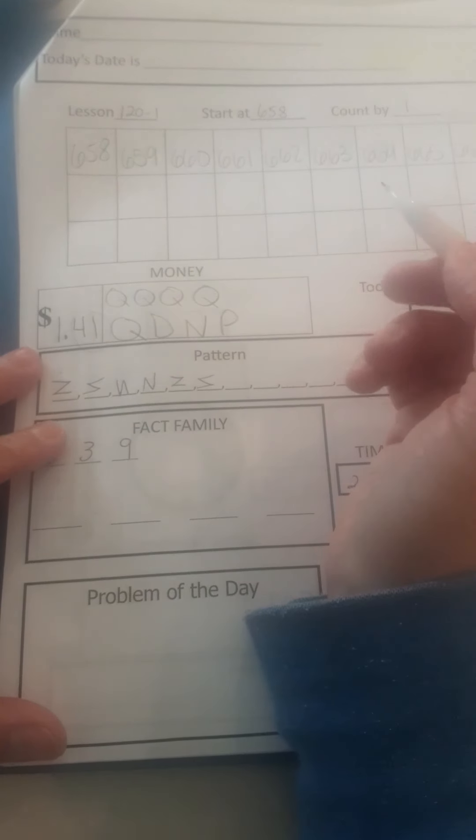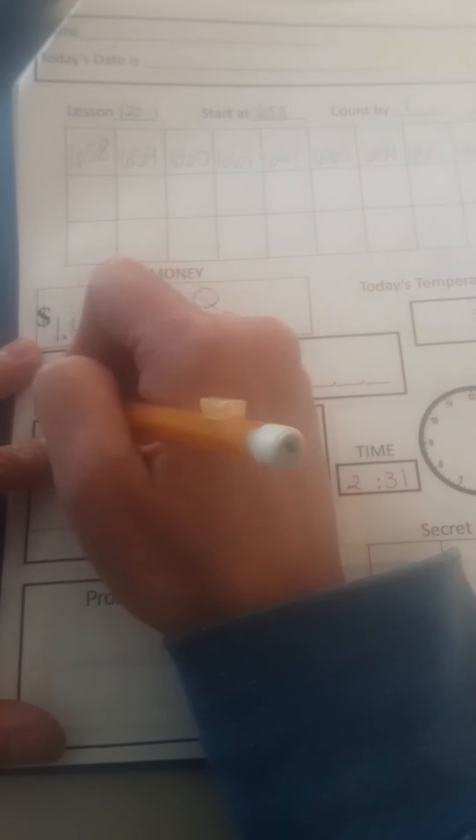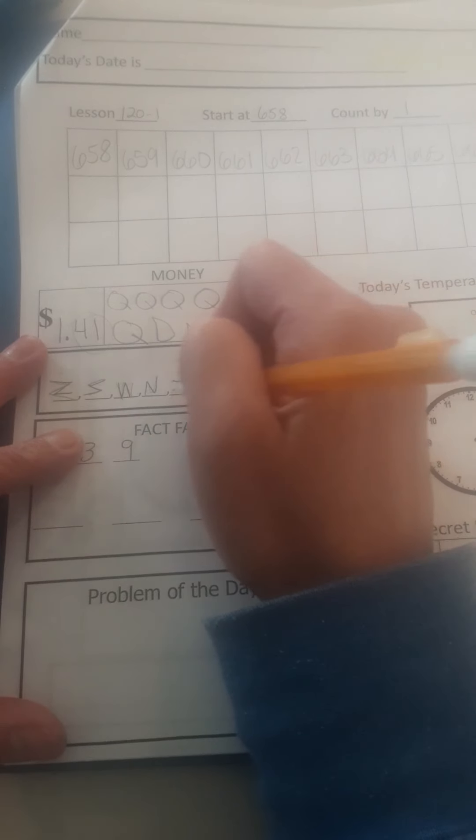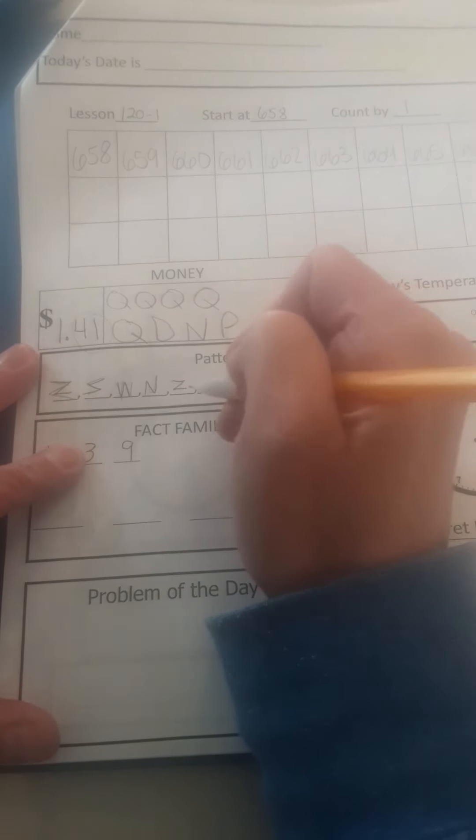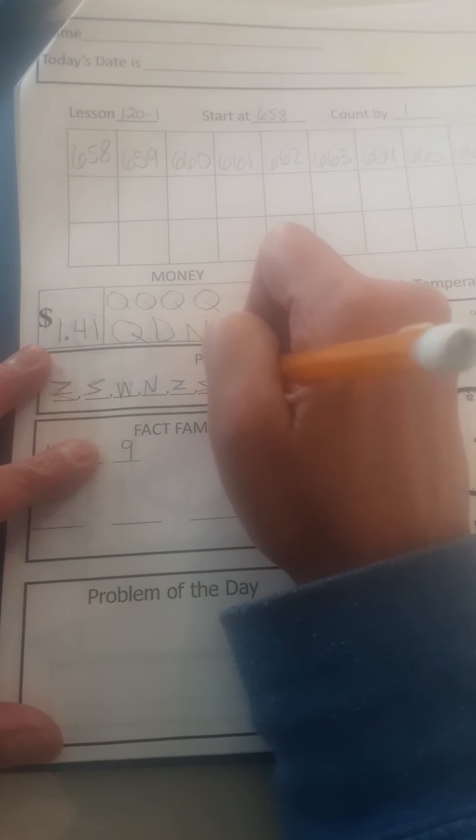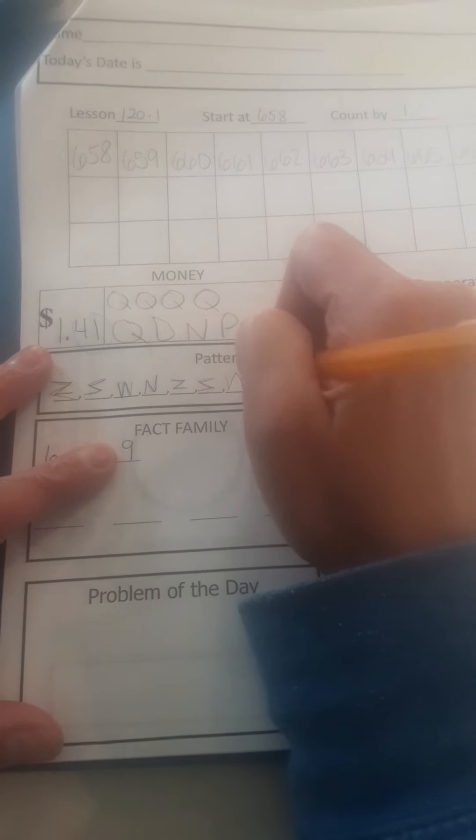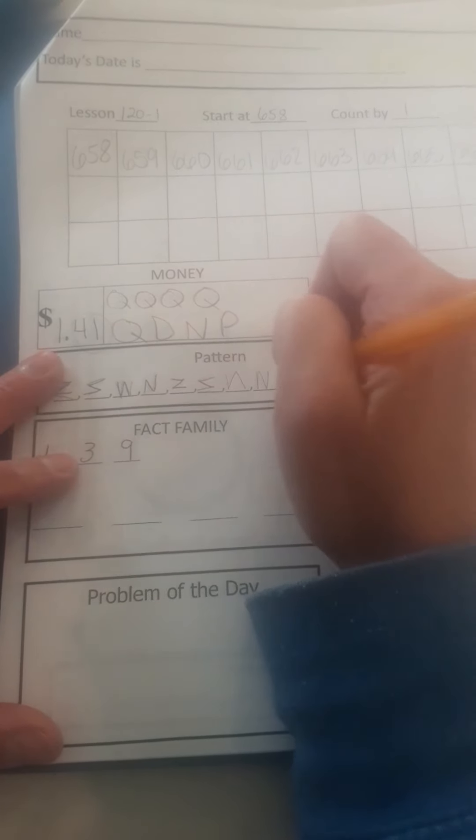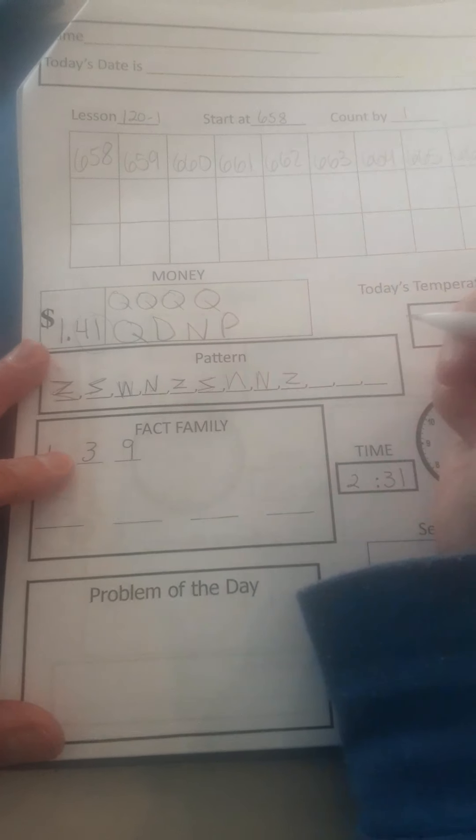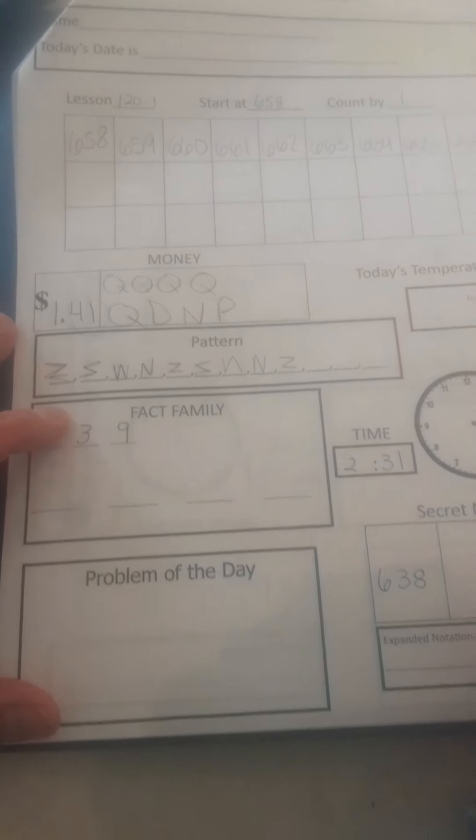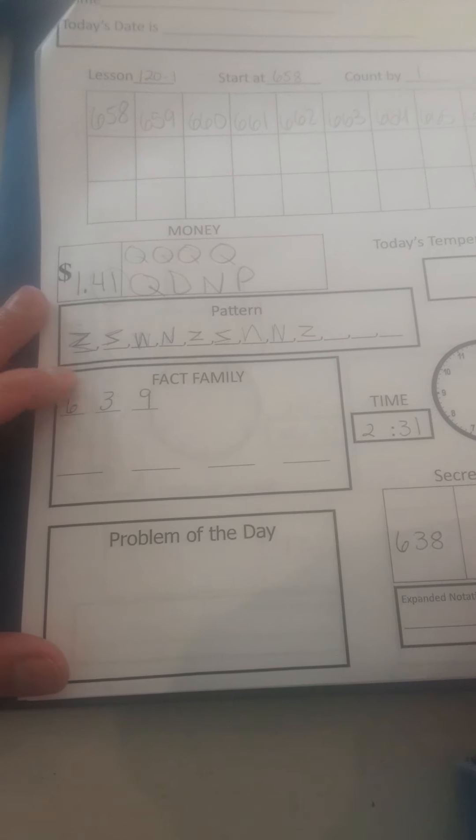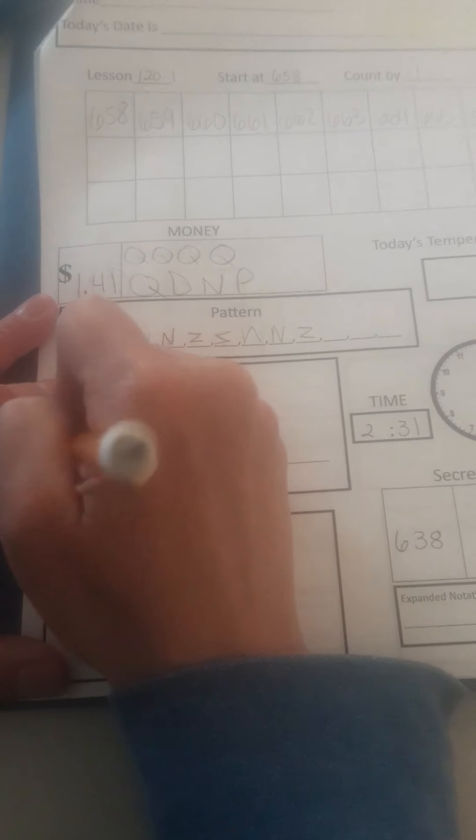Okay, the pattern today we have a Z, a backwards Z, a backwards N, a regular N, Z, backwards Z. Now we have to do our backwards N which is hard. You have to do a regular N and then after the regular N is the Z again.